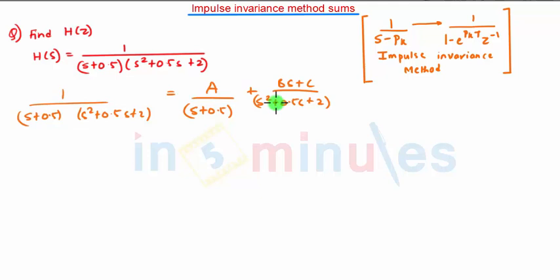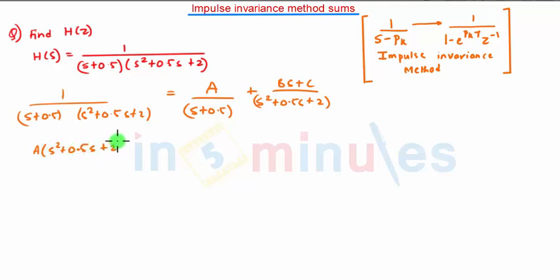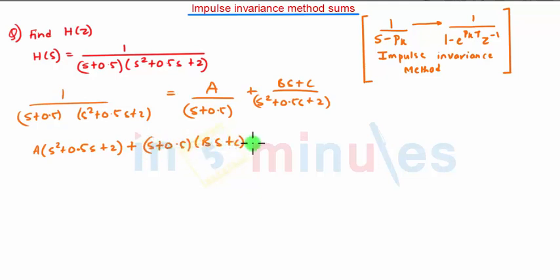Now we have to cross multiply. After cross multiplying we will get A(s² + 0.5s + 2) plus (s + 0.5)(Bs + C), and that is equal to 1.